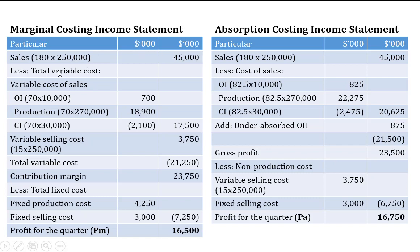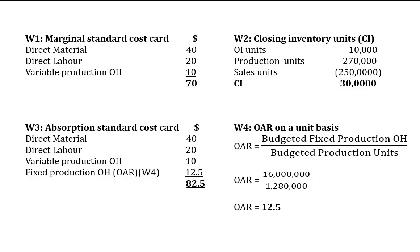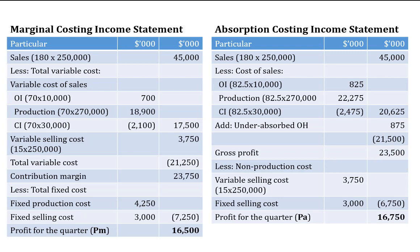We now compute the variable cost of sales. In the marginal costing system, inventory is valued using only variable production costs. The cost of sales is obtained by taking opening inventory, adding production, and deducting closing inventory. To obtain opening inventory, we take cost per unit multiplied by opening inventory units. From Working 1 — the marginal standard cost card — direct material is $40, direct labor is $20, and variable production overhead is $10, giving a total marginal cost of $70 per unit.